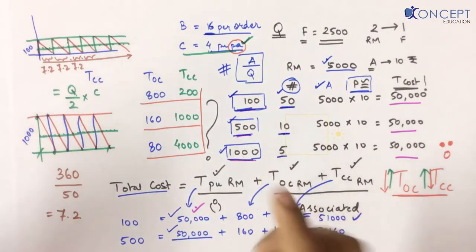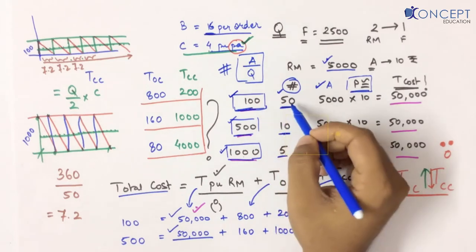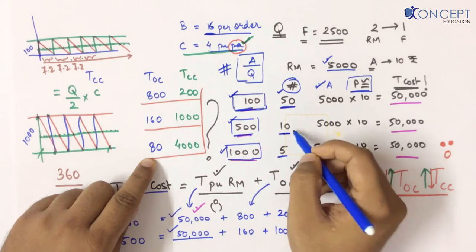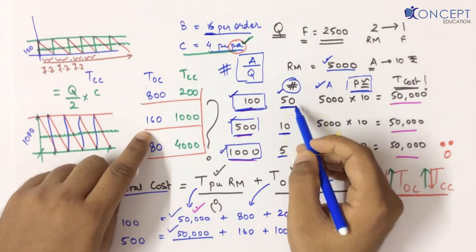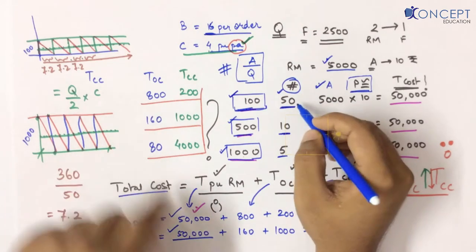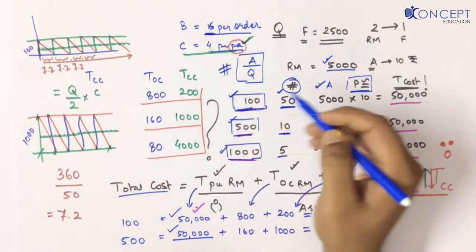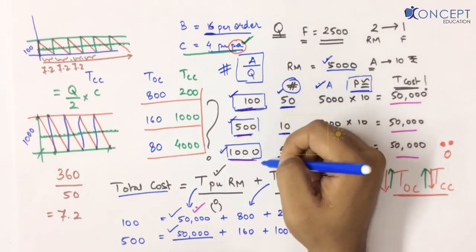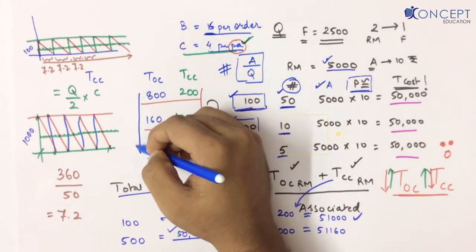I found that as the number of orders increases, the ordering cost increases. If orders are 5, ordering cost is low; if orders are 10, it's a bit higher; and if orders are 50, ordering cost is very high. So the number of orders plays a very important role in ordering cost, and the number of orders depends upon the order size. As I increase the order size, my ordering cost decreases.